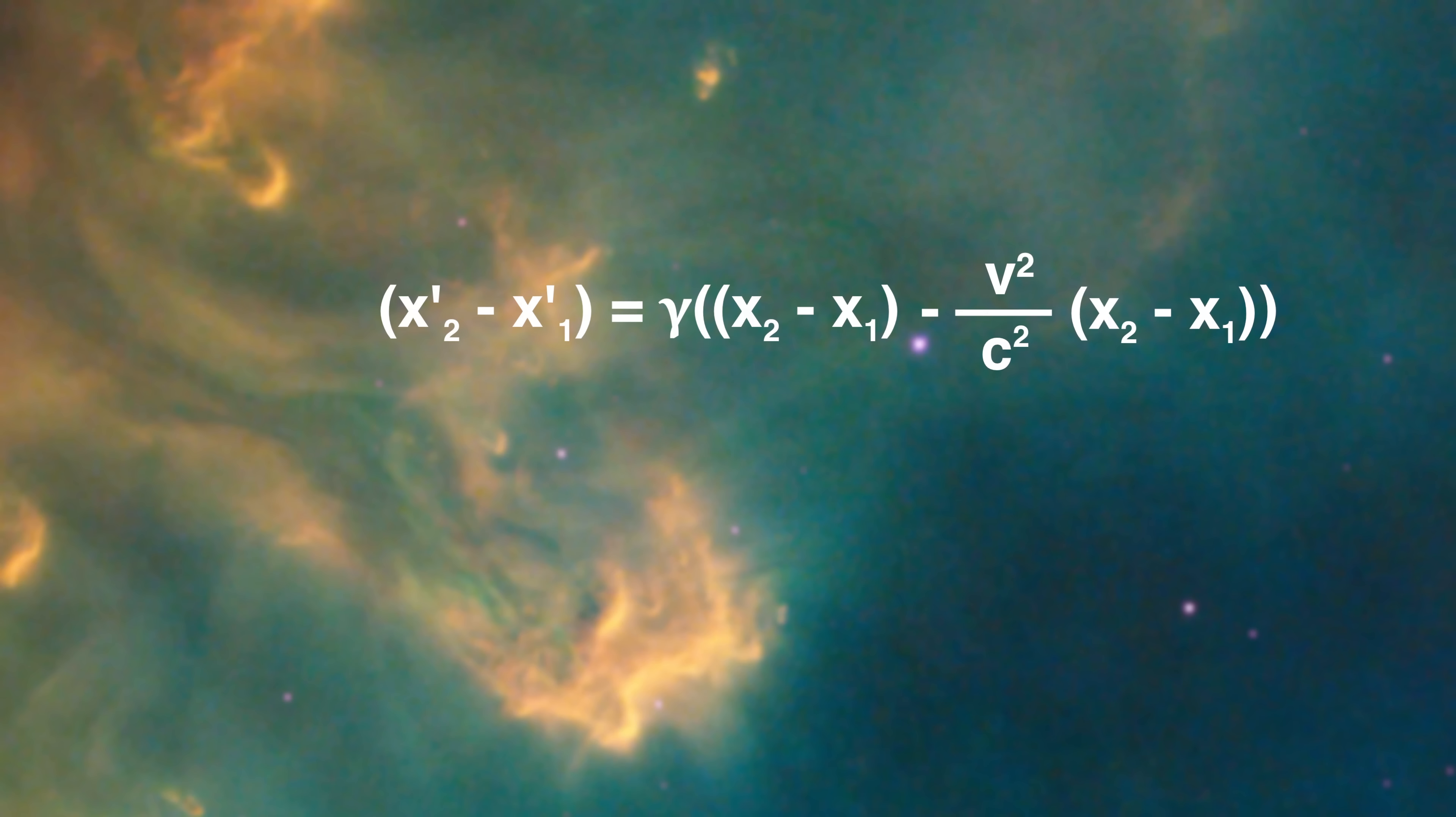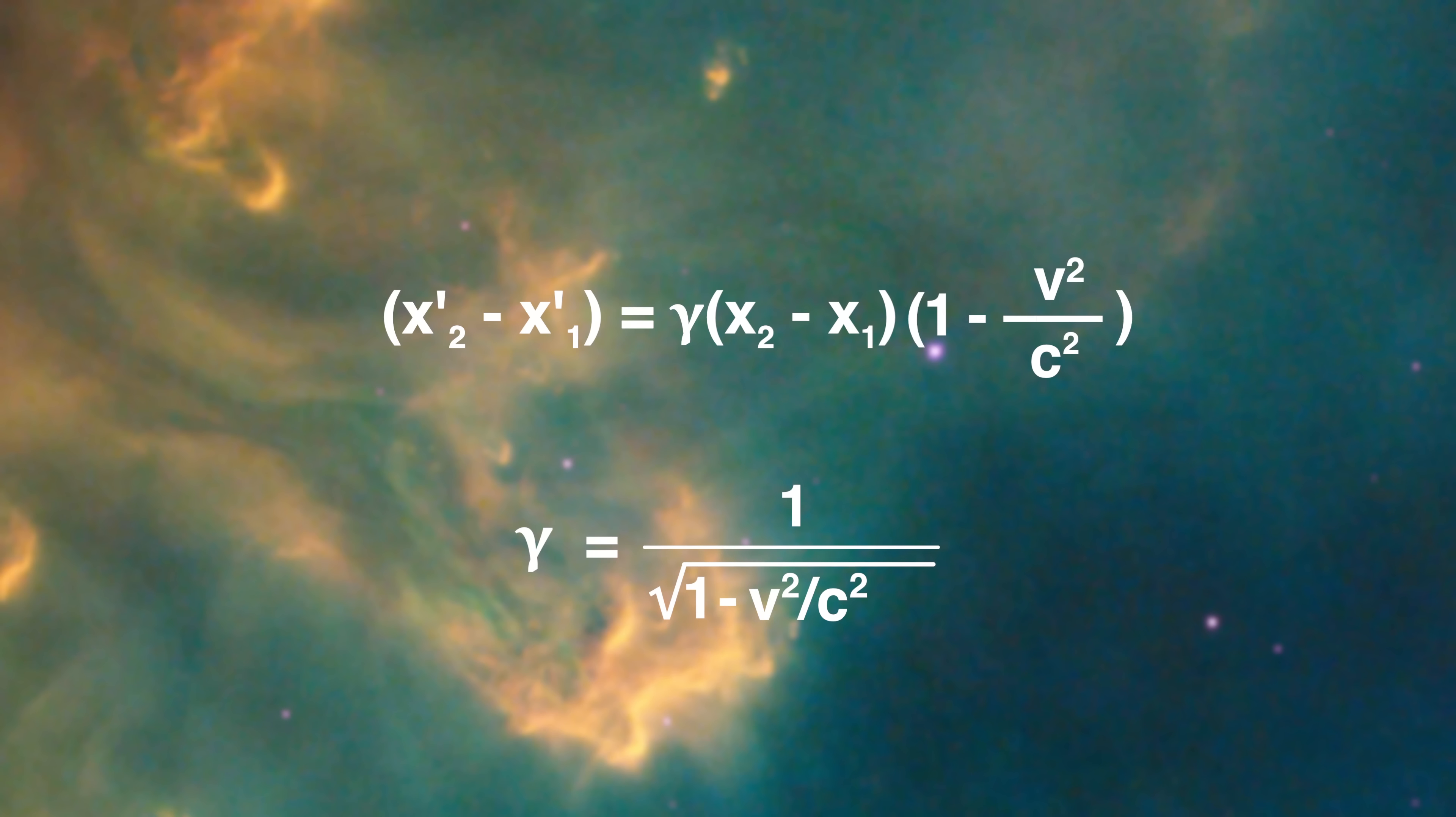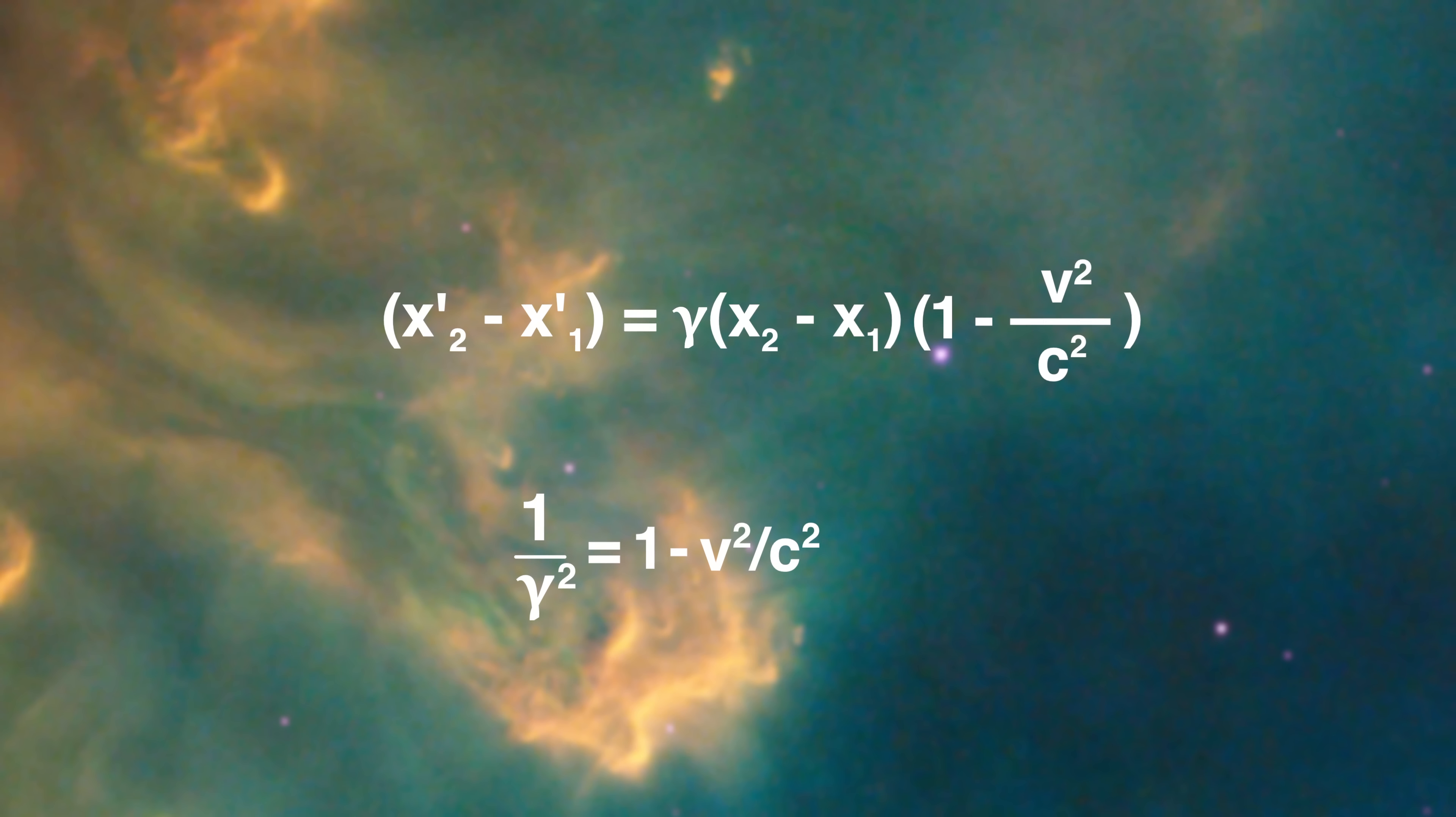So we can factor out the gamma in x2 minus x1. Now, remember that gamma is one over the square root of the quantity one minus v squared over c squared. That means that one minus v squared over c squared is equal to one over gamma squared. So we can substitute that in and get this equation here. And finally, we can cancel the gammas and get this equation.